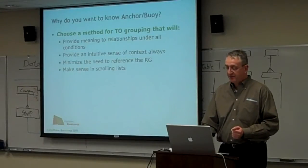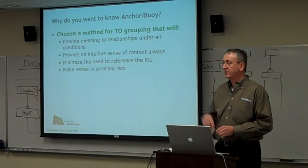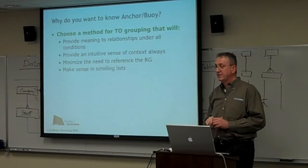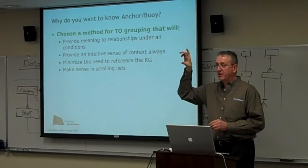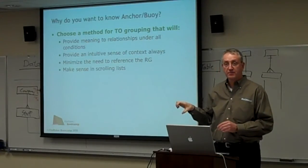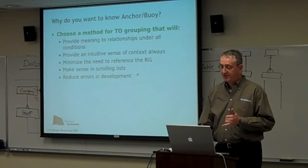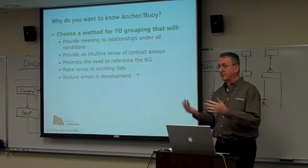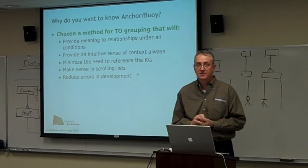The big ultimate goal is that you want it to make sense in scrolling lists. When you're pulling a list of fields and dropping a field into a layout, you want the fields you can use at the top to be immediately identifiable. They should be gathered for you intuitively. Reducing errors in development is critical — because if your convention is inconsistent, you end up talking to the wrong table, getting the wrong found set, wrong results, and pulling the wrong IDs.